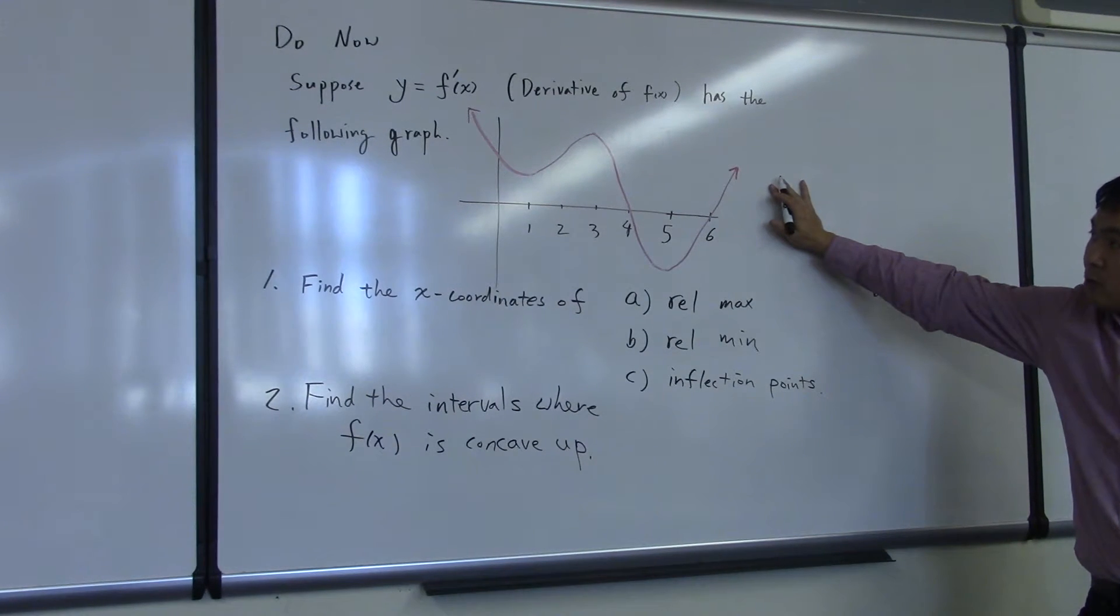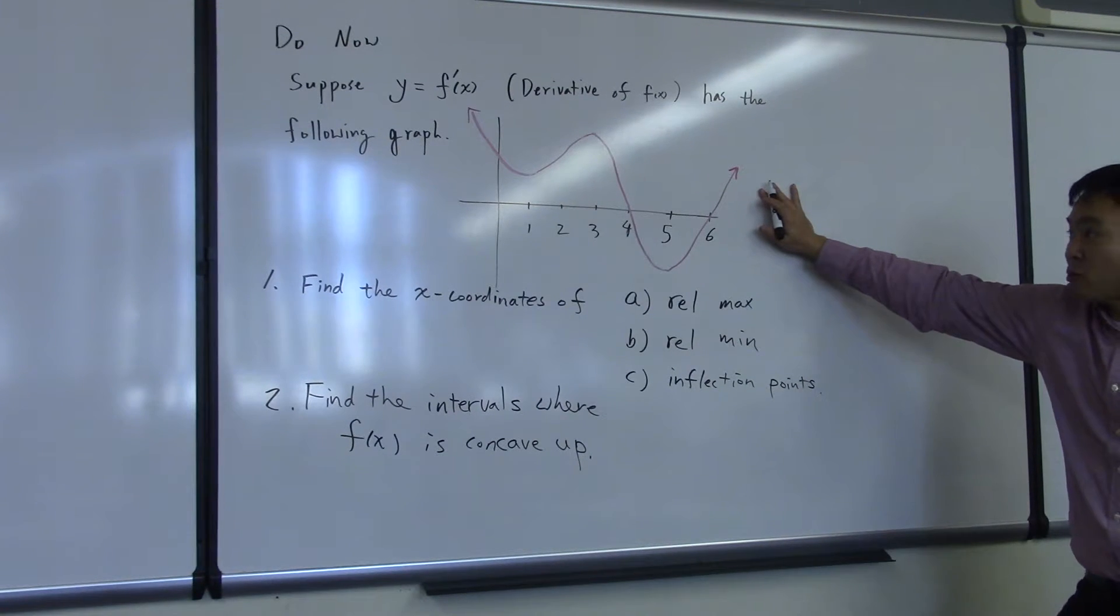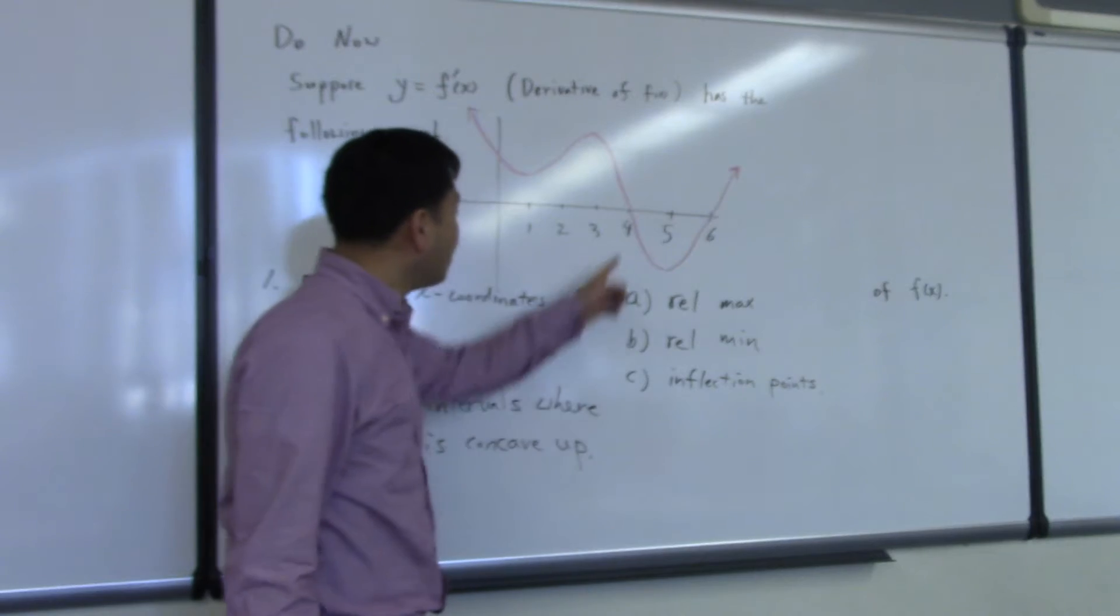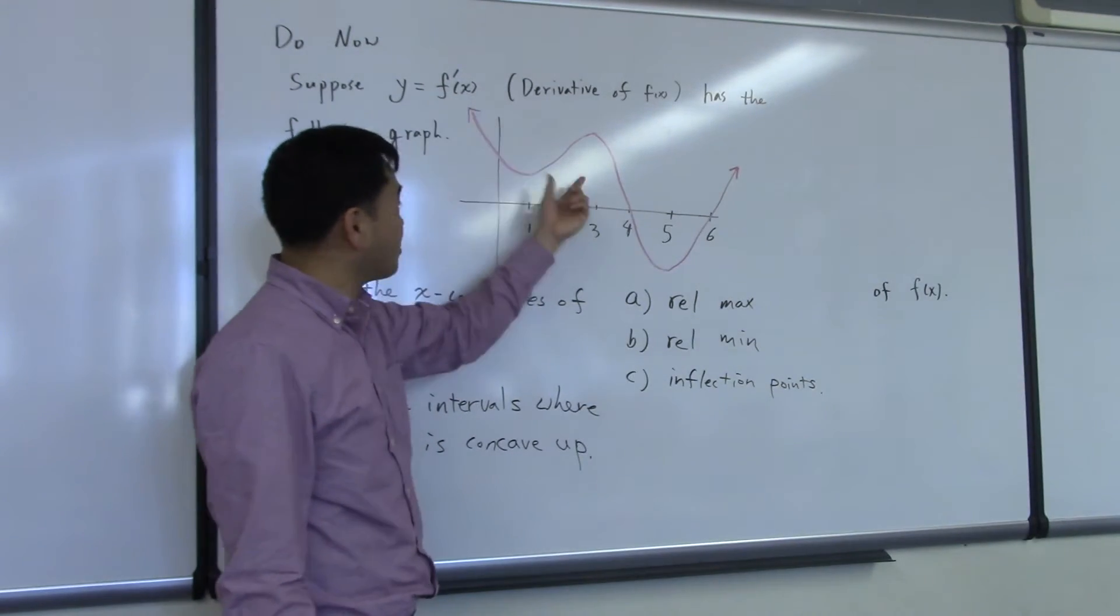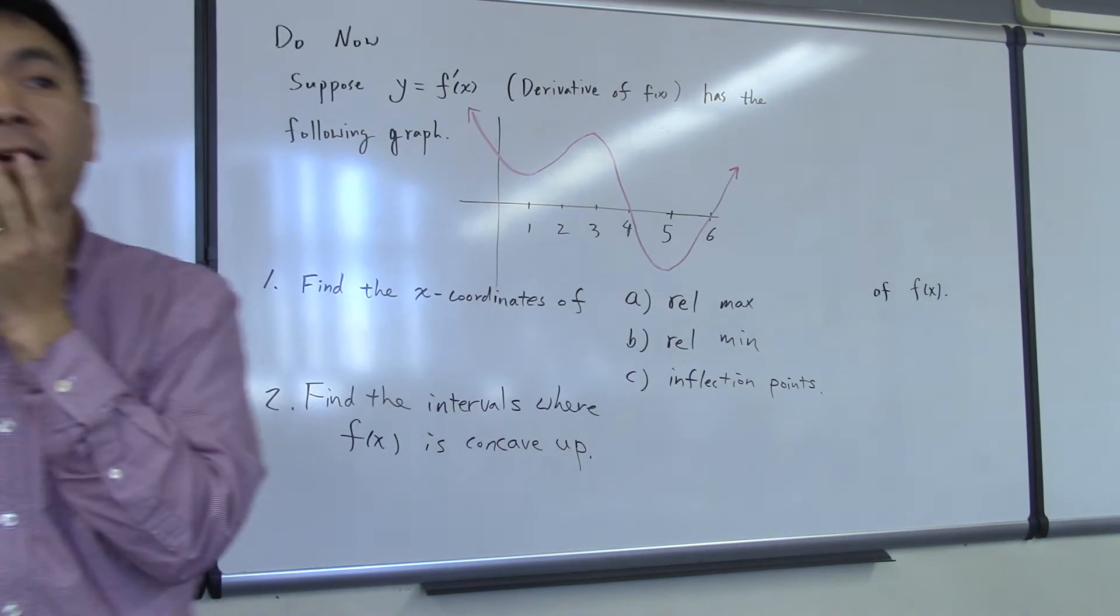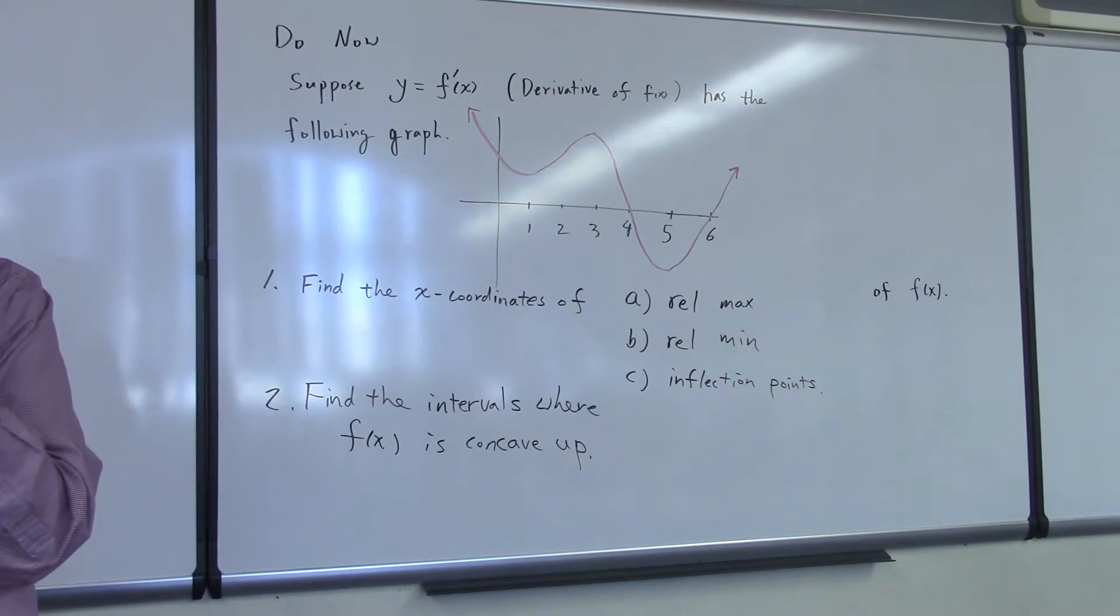Now, although it's pretty hard to figure out the original function f of x, you can still gather a lot of information about the original function just by knowing the graph of f prime of x. For example, before 4, do you see that f prime is positive? What does that mean for f of x? If f prime is positive, what do you know about f of x?